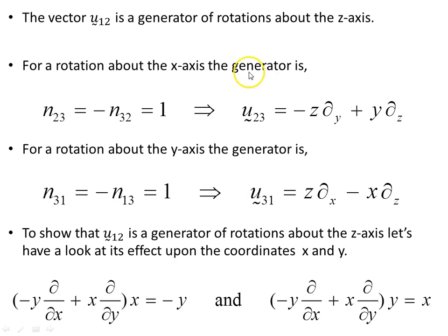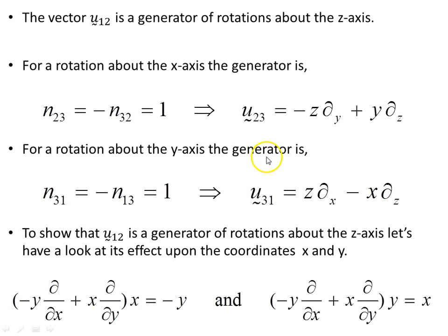For a rotation about the x-axis, the generator is this object, using the same method as before. For a rotation about the y-axis, the generator is this object here, using these elements of the matrix, giving us this vector.